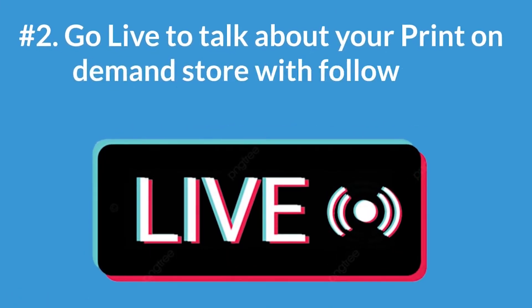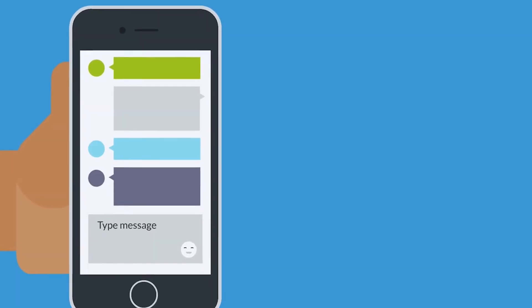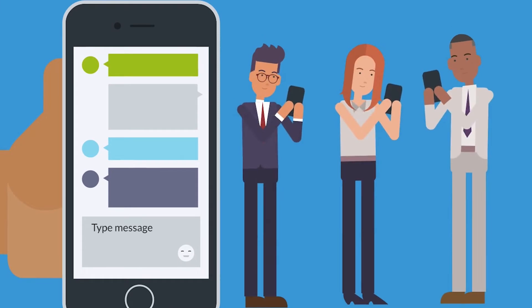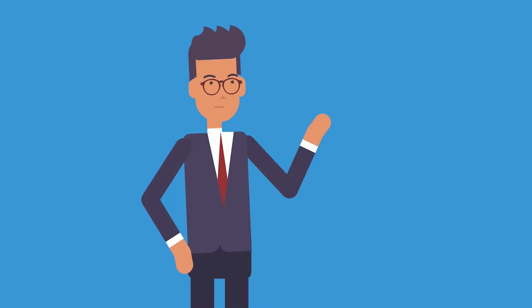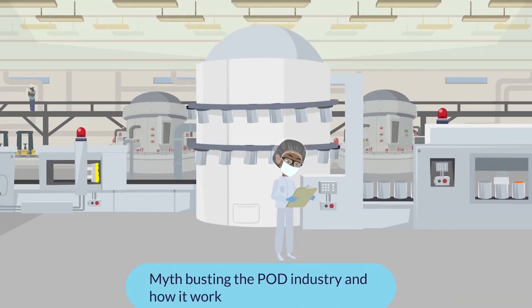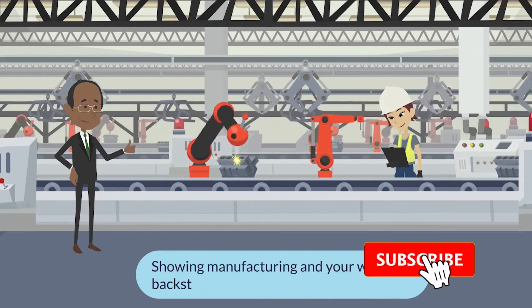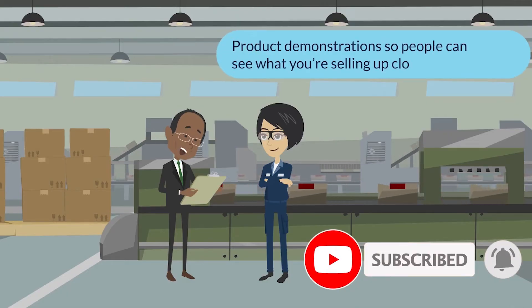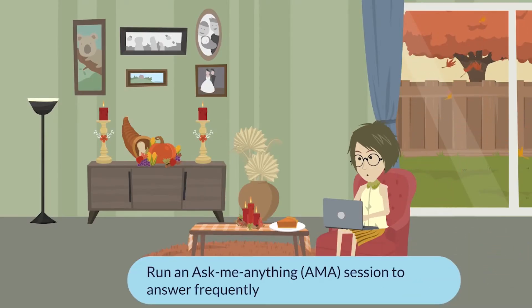Tip 2: Go live to talk about your print-on-demand store with followers. The live feature on TikTok allows users to chat with their followers in real time. This is suitable if your target audience are millennials or Generation Z. Some quick ideas for live video topics are myth-busting the POD industry and how it works for anyone interested, showing manufacturing and your work backstage, product demonstrations so people can see what you're selling up close, and running an Ask Me Anything or AMA session to answer frequently asked questions.